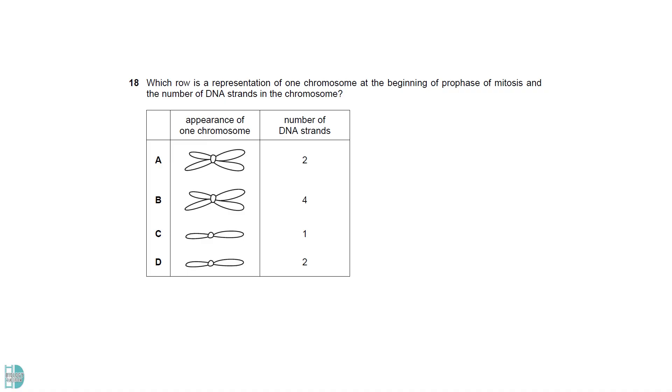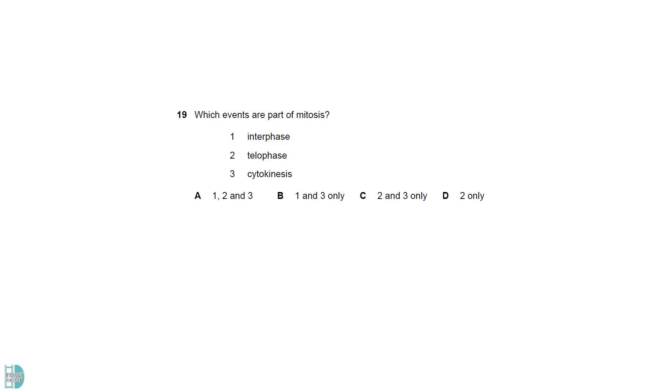In prophase, each chromosome has 2 sister chromatids due to DNA replication in interphase. Each chromatid is a double-stranded DNA, so there are 4 strands of DNA in total. Interphase and cytokinesis are part of the cell cycle that occur before and after mitosis. Mitosis is made up of prophase, metaphase, anaphase, and telophase.